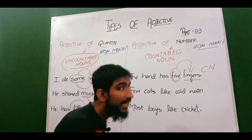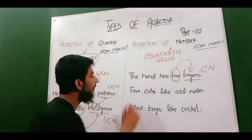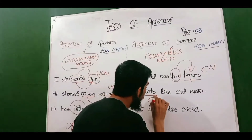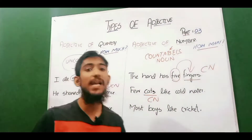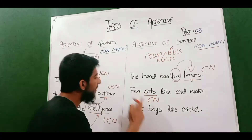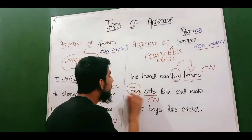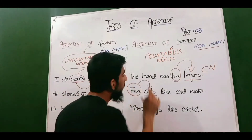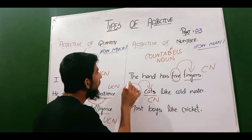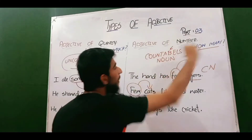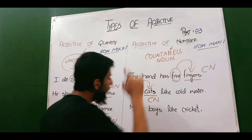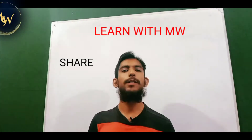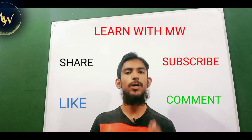Now look at the second example: 'Few kates like cold water.' Kates is basically a countable noun because its plural form — for one kate, the plural will be two kates, three kates. So kates is a countable noun, and 'few' basically adds meaning to that countable noun. That's why 'few' is basically an adjective of number because it answers the question 'how many.'